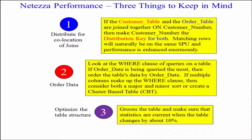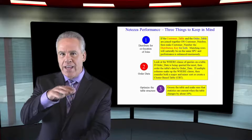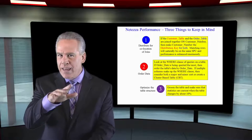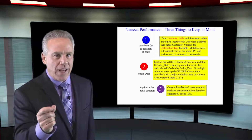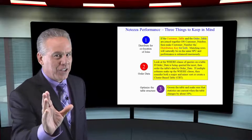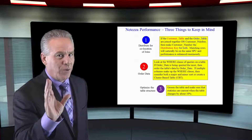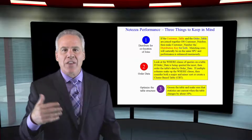That's the best thing you can do for design. The second thing you'll see in this chapter is how you can actually order the data on a particular table. Netiza makes it very easy. We know that each SPU holds a portion of that data, and ordering that data in a particular way can make queries much faster.